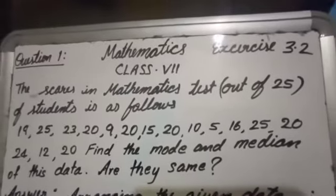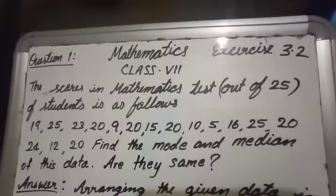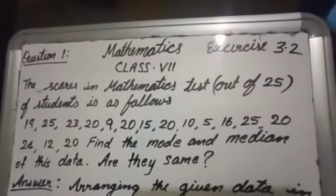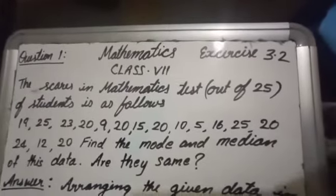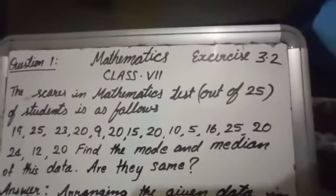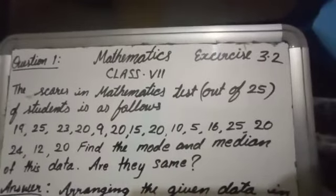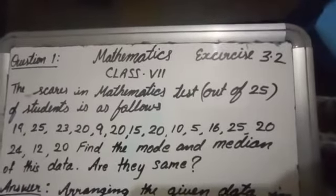The scores in mathematics test out of 25 of students is as follows: 19, 25, 23, 29, 20, 15, 20, 10, 5, 16, 25, 20, 24, 12, 20. Find the mode and median of this data. Are they same?